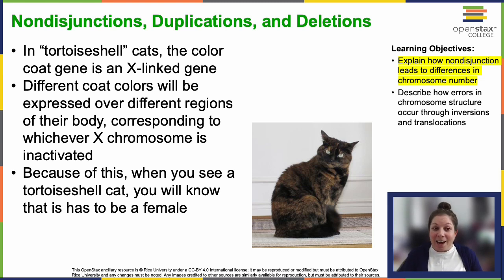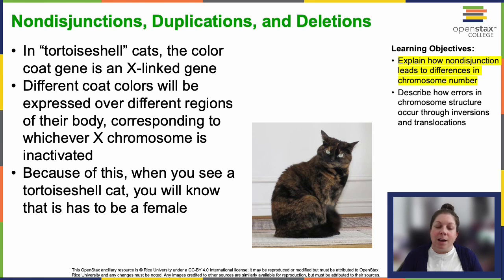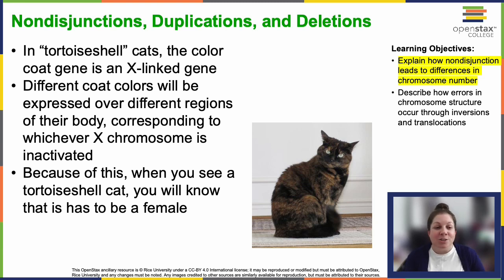In tortoiseshell cats, X inactivation leads to coat color variation. Heterozygous females express different coat colors depending on which X chromosome was inactivated during embryonic cell progenitors — some cell lines inactivate one X and some the other, producing the cool tortoiseshell pattern. Tortoiseshell cats are always female due to this phenomenon. Very rarely you will encounter a male cat that displays this, and if you do, you know that cat has a trisomy disorder — it possesses an excess X chromosome, which is really uncommon but does show up every once in a while.